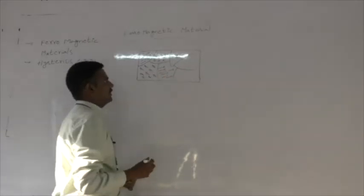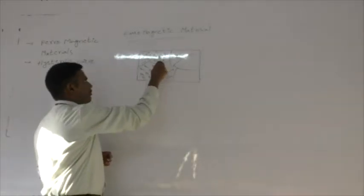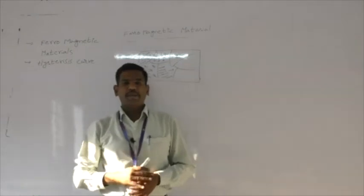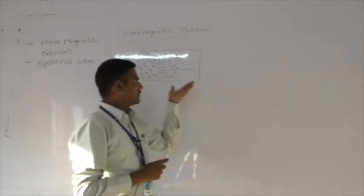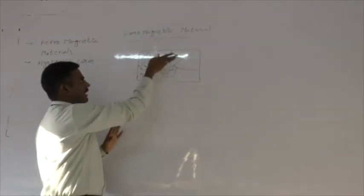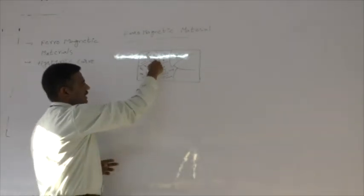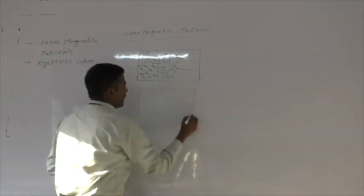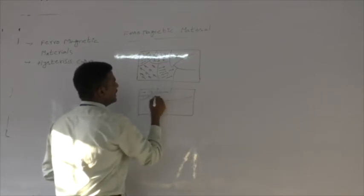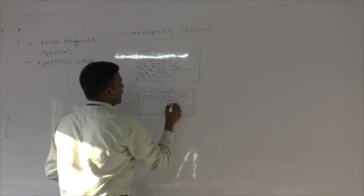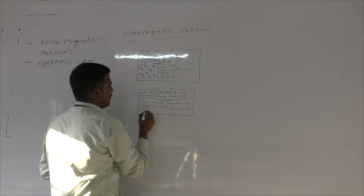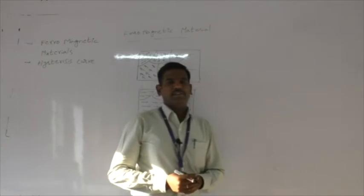Before being placed in an external field, the total vectorial sum of these domains' net magnetic moments becomes zero. Therefore, ferromagnetic materials do not exhibit magnetic properties unless kept in an external magnetic field. When placed in an external field, these small domains try to align in a single direction so that a large magnetic moment develops in one direction.